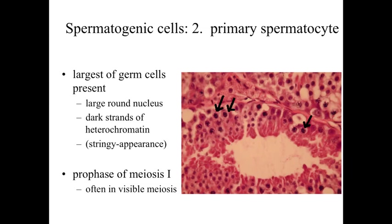Some cells produced by the spermatogonia will become spermatocytes, pushed up into the epithelium where they start to differentiate. Primary spermatocytes are the largest of the germ cells — characterized by a large round nucleus with dark, stringy strands of heterochromatin. The reason for that stringy appearance is that these cells are going through meiosis I, and many are recognized as being in prophase of meiosis I, or in some cases actively in meiosis with visible chromosomes dividing.